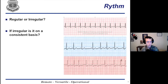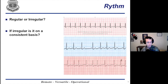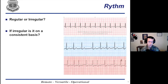Next we look at rhythm in general: space out the QRS complexes, measure them, and see if they're regular or irregular. If irregular, is it irregular on a consistent basis, or irregularly irregular? Another way to assess this is to fold your EKG strip in half and hold it up to the light to see if QRS complexes fall on the same part.